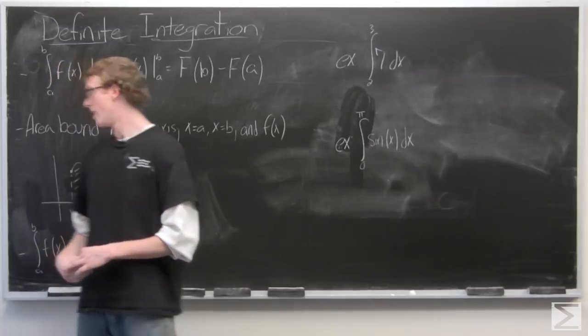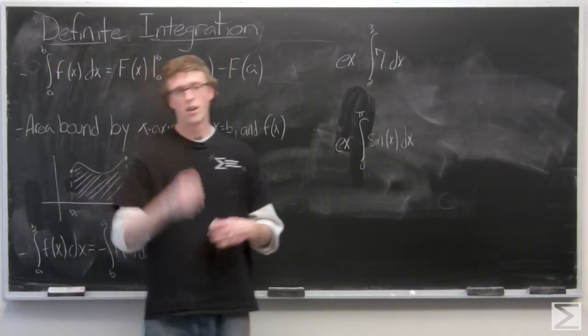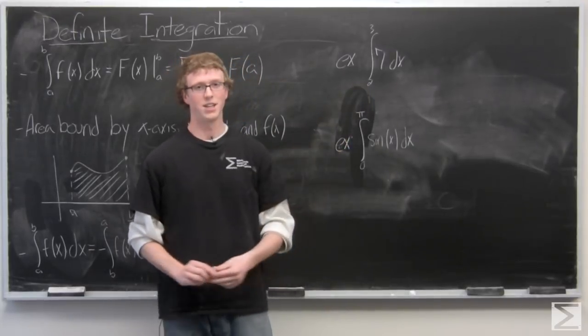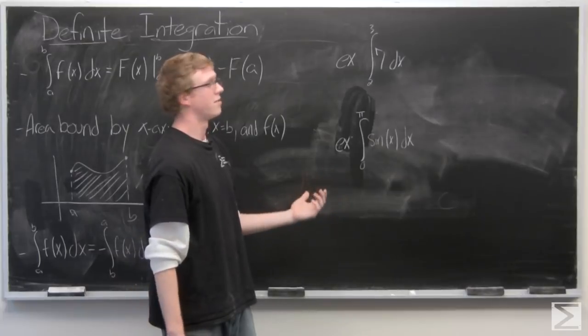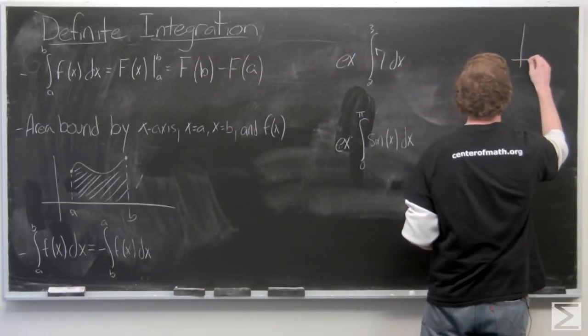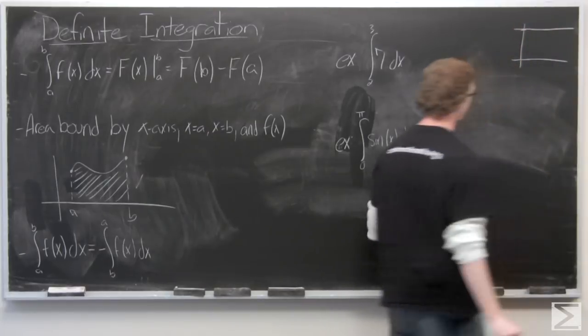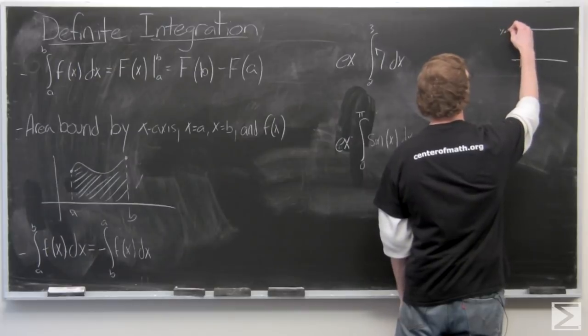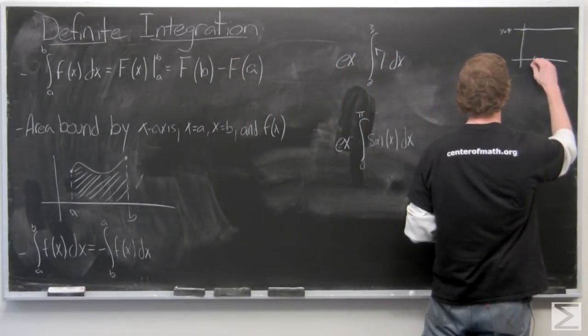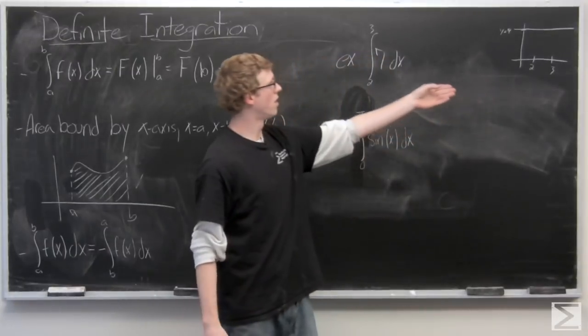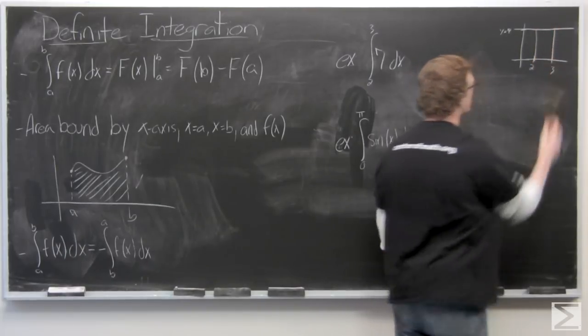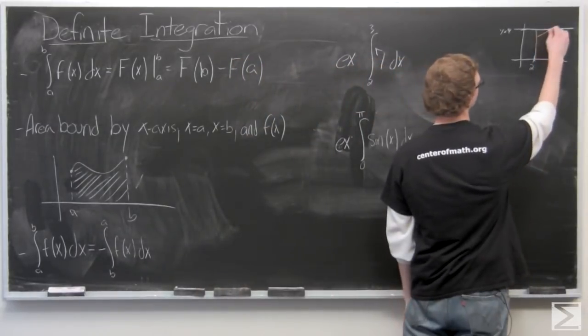So yielding this area we can take a look at a constant function and find that area that is bounding in the xy plane. So take the constant function f of x equals 7. That's just a line at y equals 7. And we have bounds a equals 2 and b equals 3. So this is going to section off this area here between the x-axis, the function, and the lines x equals a and x equals b. So this integral is going to give us this area here.